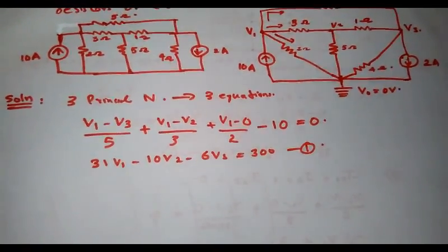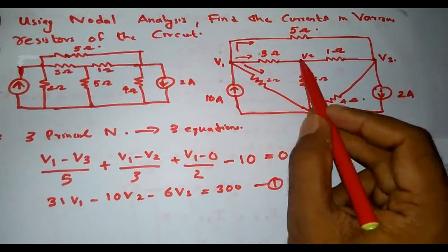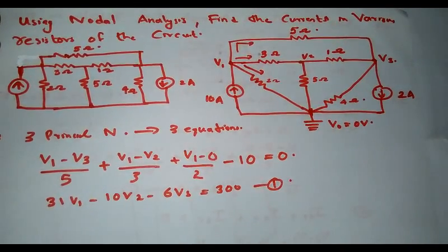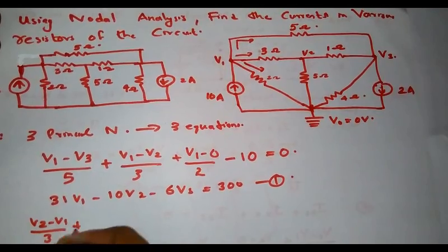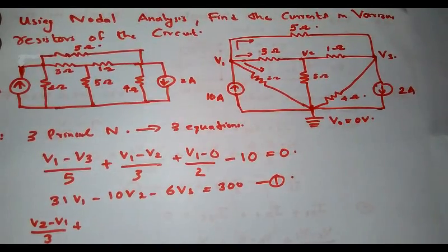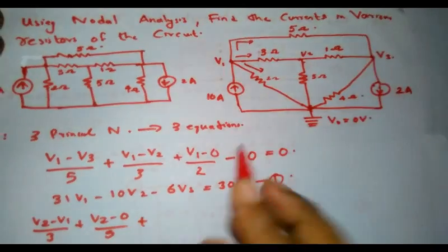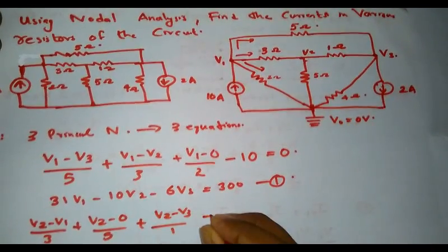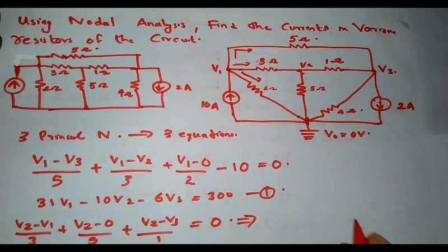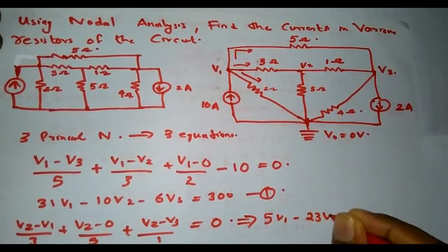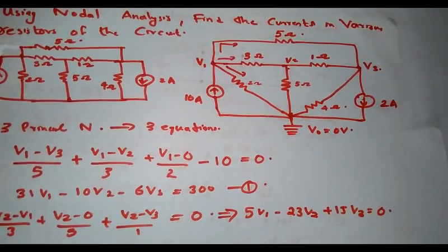Similarly, applying Kirchhoff's current law at the second principal node V2, there are three branches connected. The current through the 3 ohm resistor is (V2 - V1)/3. The current through the 5 ohm resistor is (V2 - 0)/5. The current through the 1 ohm resistor is (V2 - V3)/1. Setting their sum equal to zero and simplifying gives: 5V1 - 23V2 + 15V3 = 0. Let this be equation number 2.